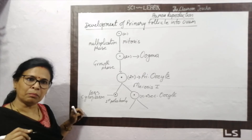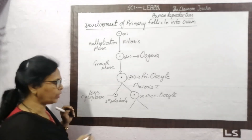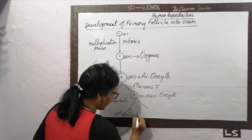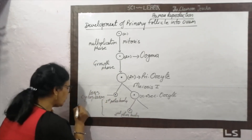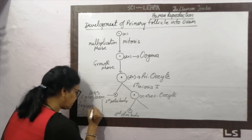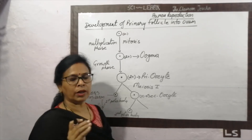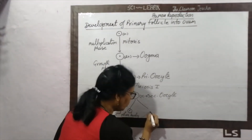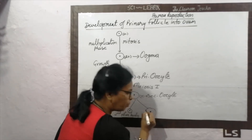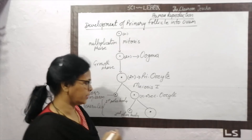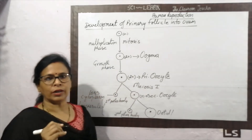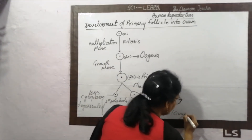After meiosis 2, the cell with less cytoplasm is called the second polar body, which degenerates in the course of time. The larger cell, having the nucleus and a large amount of cytoplasm, is called the ootid — also known as the ovum or egg — and it is N (haploid) in nature.